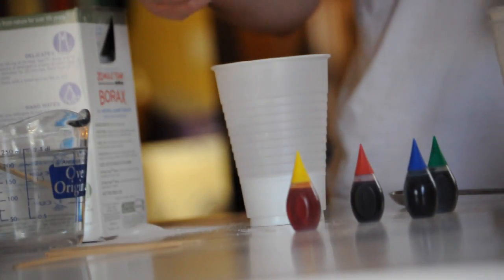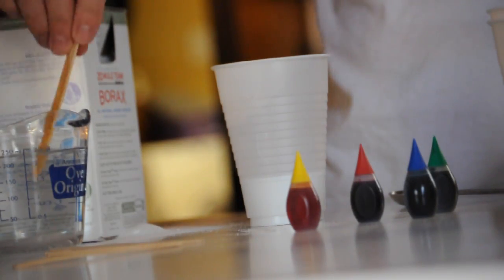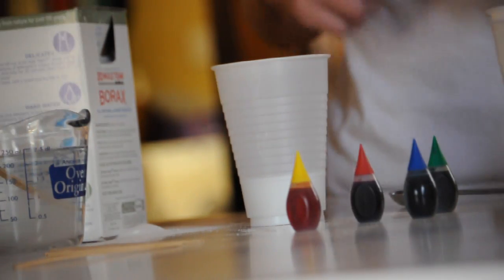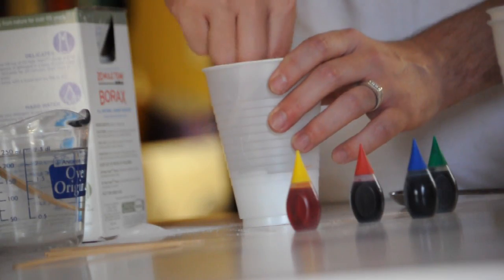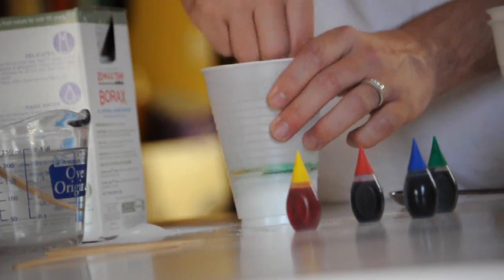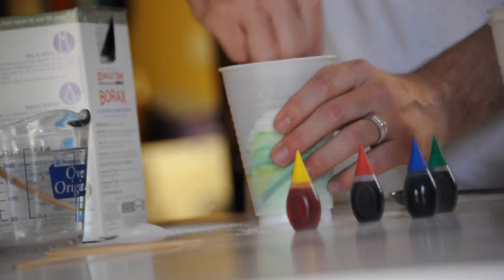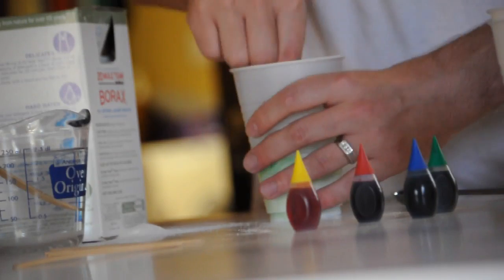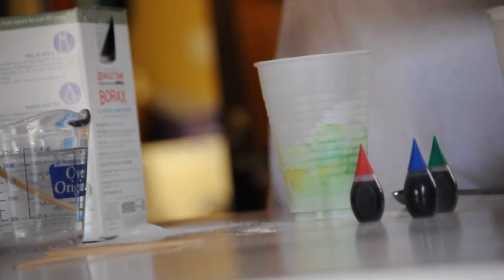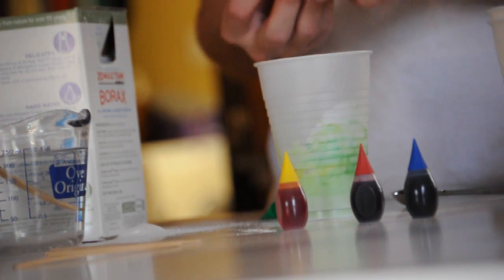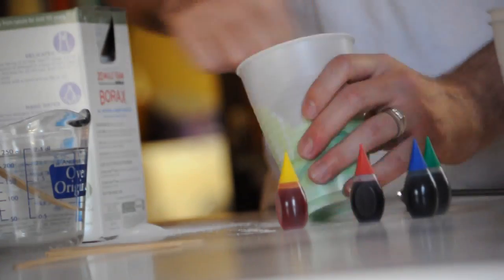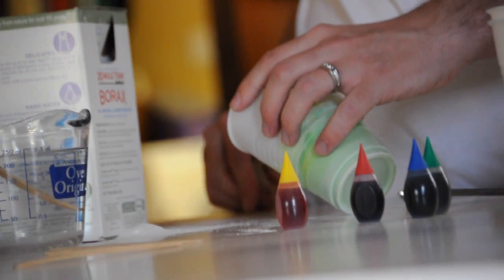Then we're going to take a new stirring stick. Not the same one that you used to mix your borax and your water. Take a new one so that it doesn't start solidifying. And mix your colors together in the glue. Then just keep adding the colors that you want until you get it to the color that you like, by adding just a couple of drops at a time. Right now we're just adding one drop of green and one drop of yellow.